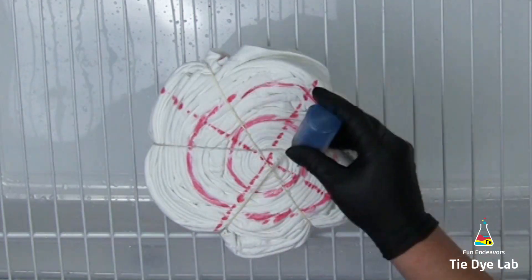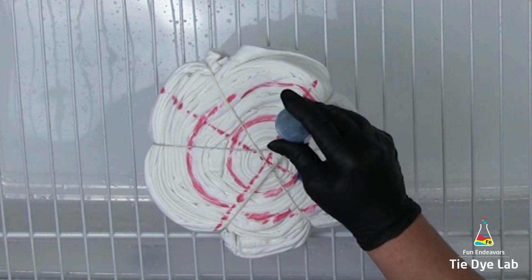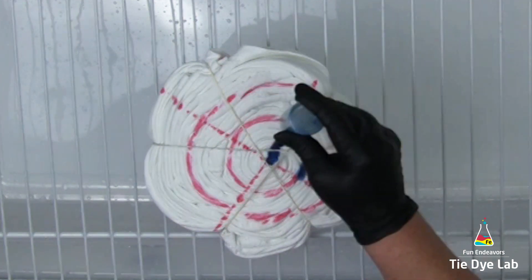The very first color that I'm going to apply is Alpine from Dharma Trading Company. I'm using that on two of the center sections that are across from each other.